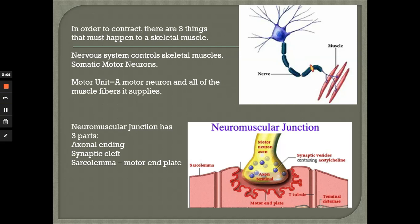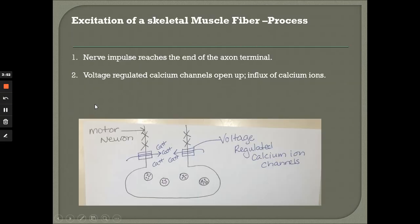There is a space between them — we call this area the neuromuscular junction. The neuromuscular junction has three parts: an axonal ending (shown in yellow), a synaptic cleft — the opening between them — and the motor end plate of the sarcolemma. Remember, the sarcolemma is the plasma membrane of the muscle fiber. Now we'll go into the excitation of a muscle fiber in more detail.